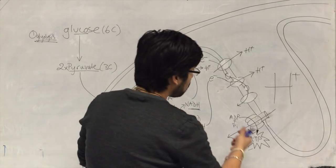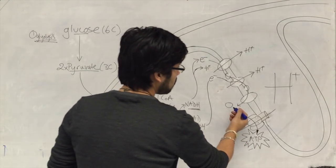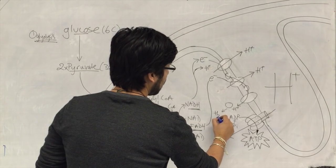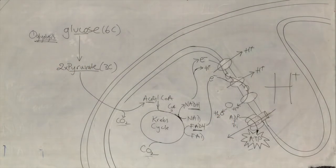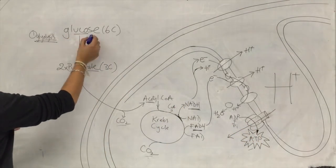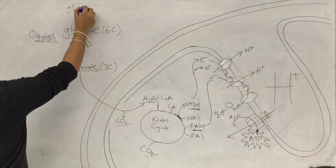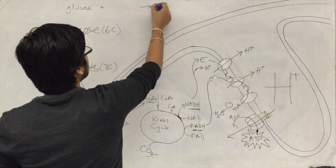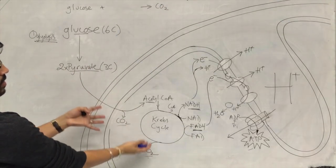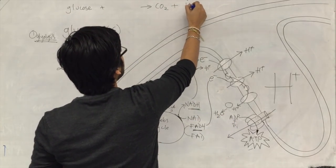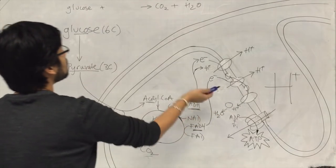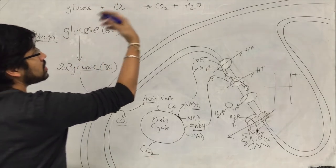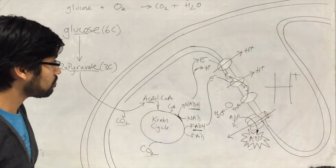What happens to the electrons? The electrons are combined with oxygen and protons to form H2O. So if we think about what we've just done: we started with glucose, produced carbon dioxide, formed water, and used up oxygen. Lo and behold — glucose plus oxygen gives you carbon dioxide plus water. That's respiration.